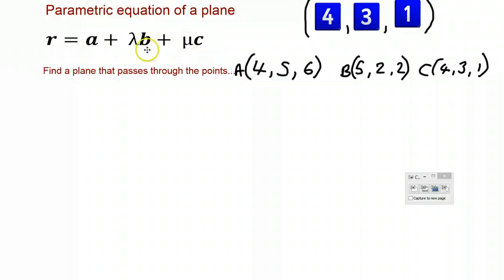What we need to be careful about is that these can't be parallel to each other. We already know a position that lies on the plane. We know three positions that lie on the plane, so we can use any of these as our position vector.